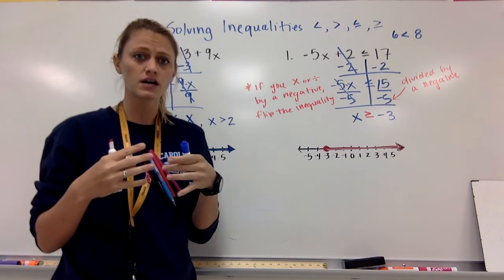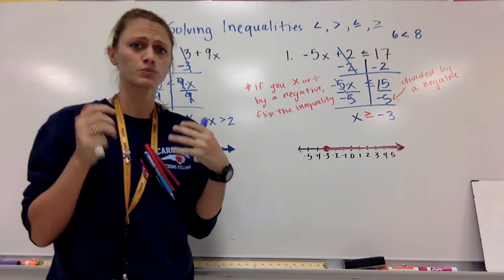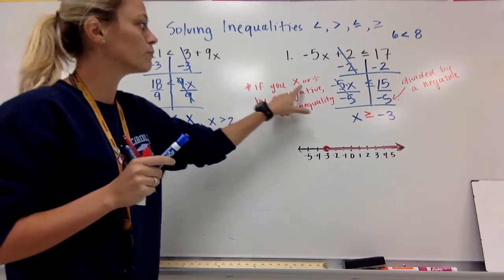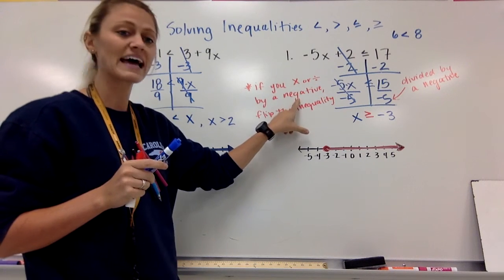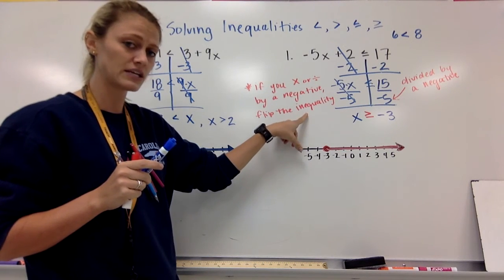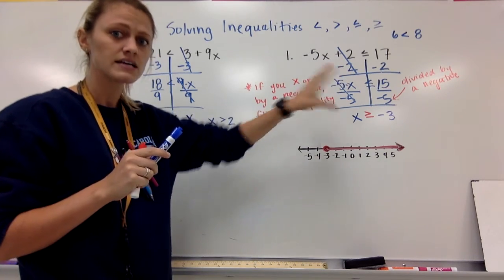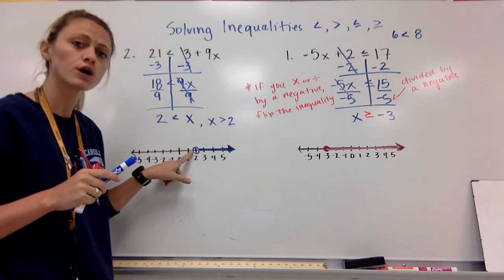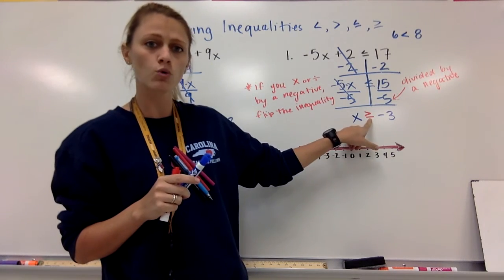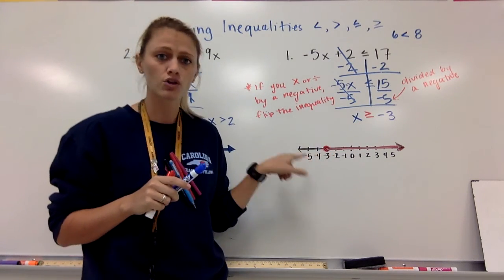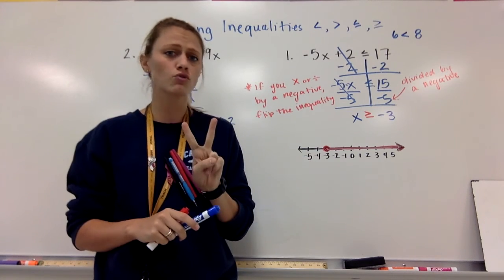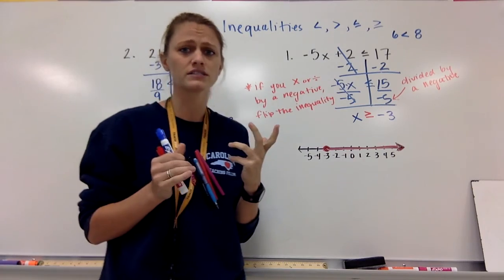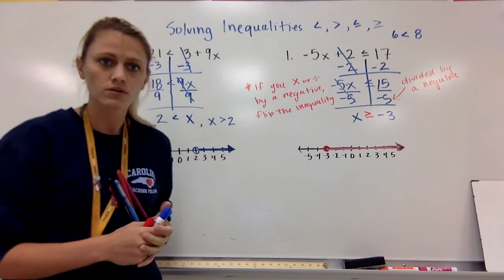Just to recap: first, you solve these like a regular equation, but if you multiply or divide by a negative, you have to flip the inequality. Second, if you don't have an or equal to, your circle is open. If you do have an or equal to — the little bar — you have to color it in. There are only two differences between these and regular equations: flipping your sign and the number line.